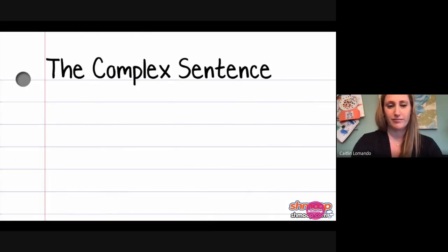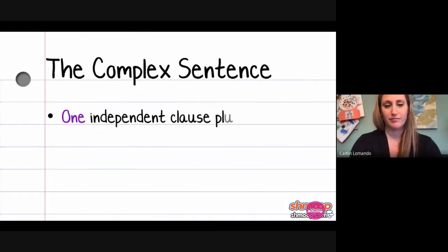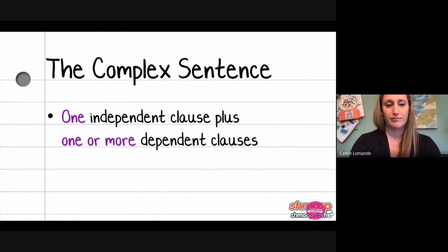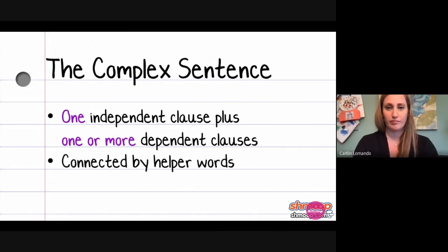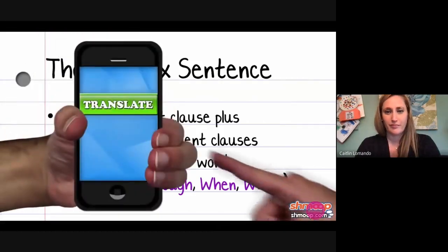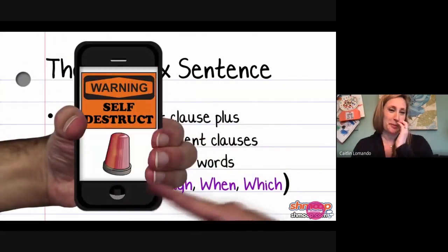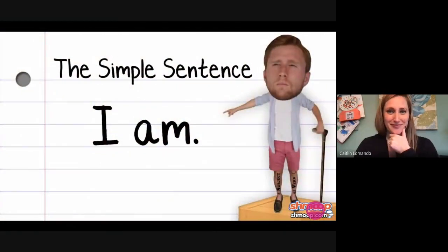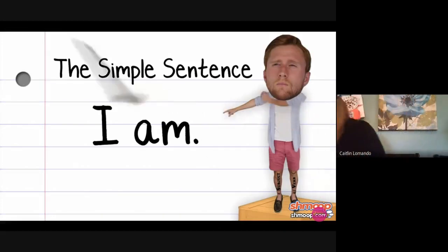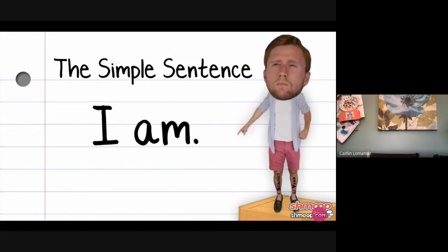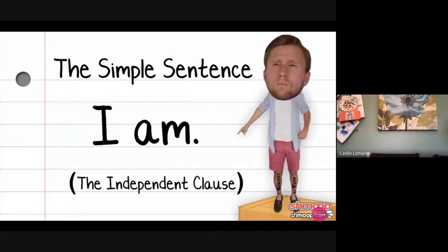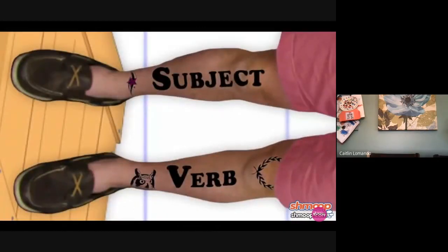Complex sentences really live up to their name. They have an independent clause plus one or more dependent clauses, which can't stand alone as complete thoughts. So they're connected via a helper word, such as although, when, or which. A simple sentence is solid — it stands on its own. That's why it's also known as an independent clause. It stands on two legs: a subject and a verb.